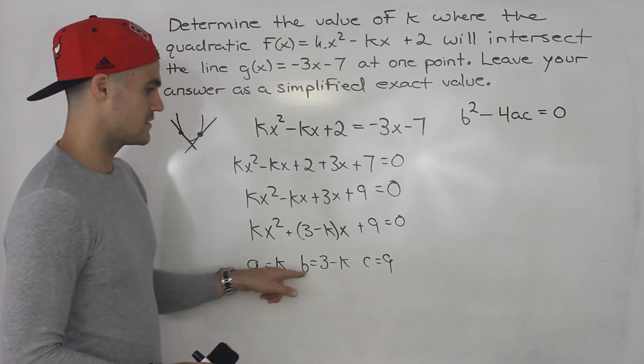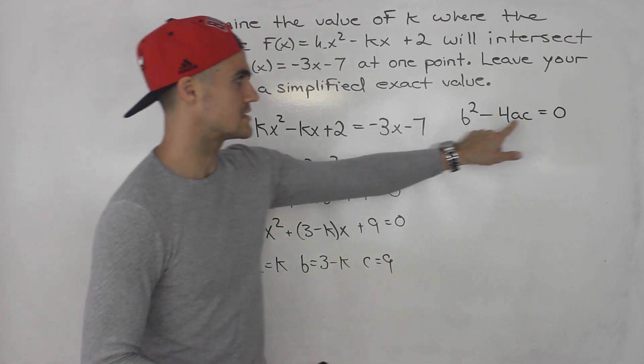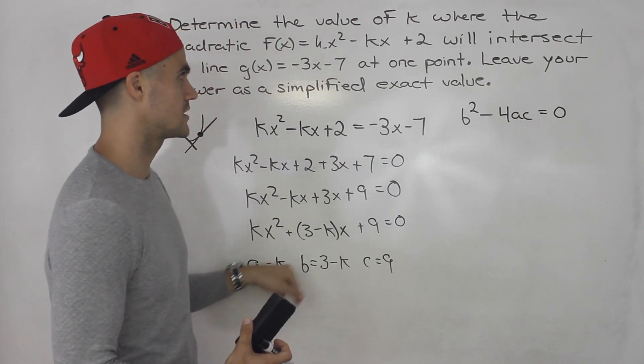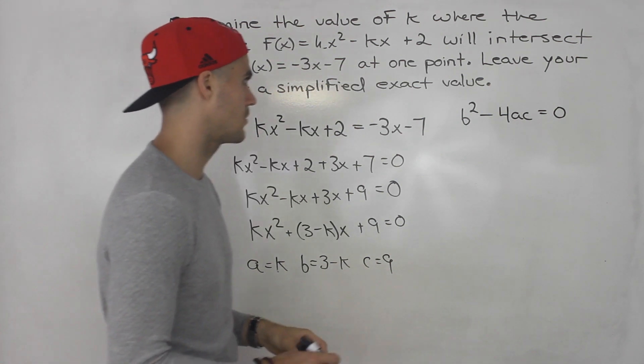So a value, b value, c value, we could just plug it in here. And we know the discriminant is equal to zero, because there's only going to be one solution of this, because the line and the quadratic are intersecting at one point.